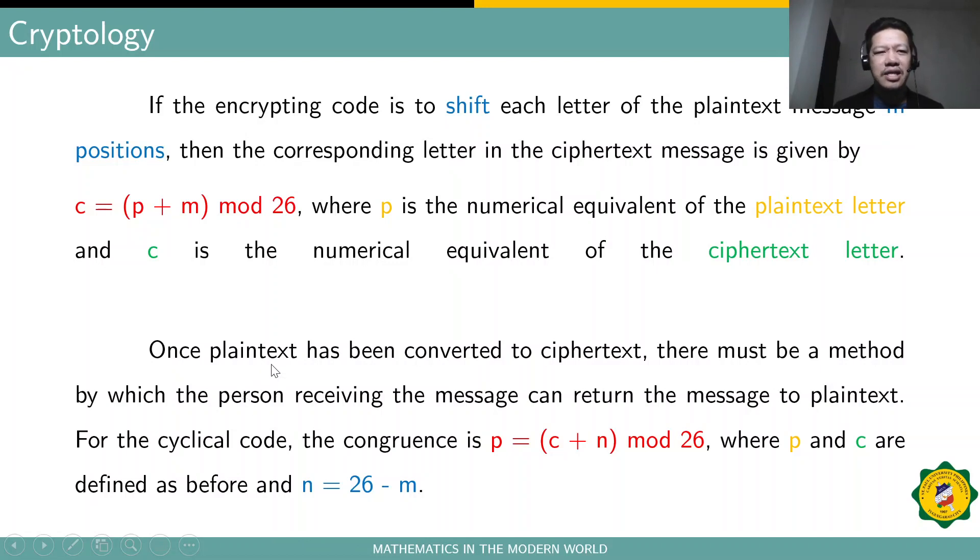So, if the encrypting code is to shift each letter of the plaintext message M positions, like, for example, in the Caesar's cipher, they use 3 shifts or 3 positions. Then, the corresponding letter in the ciphertext message is given by C is congruent to P plus M modulo 26, where P is the numerical equivalent of the plaintext letter, like the 1 to 25 and then 0 for Z, 1 for A, 2 for B. That's the P. And C is the numerical equivalent of the ciphertext message. So, this equation here, our congruence modulo, is actually what we call the encryption key.